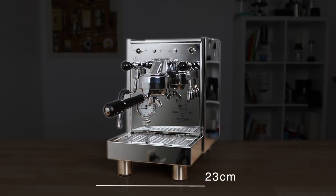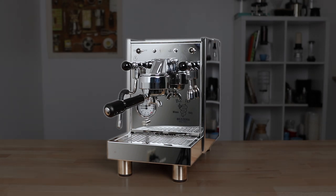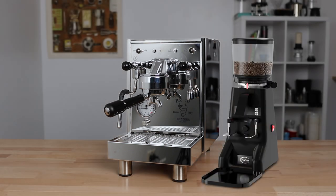But it is the width of the machine that is the real benefit. At only 23 centimeters across, it's going to leave you plenty of room to then include an espresso grinder and still not take up too much space across the bench.